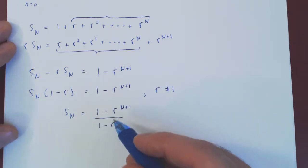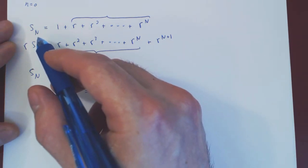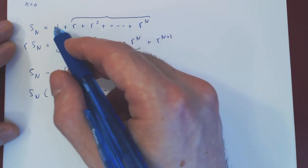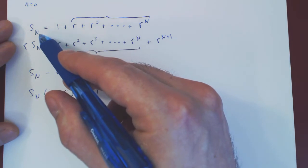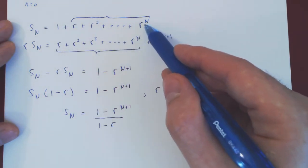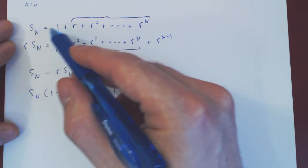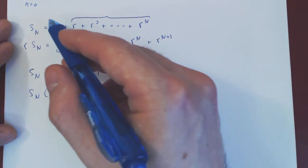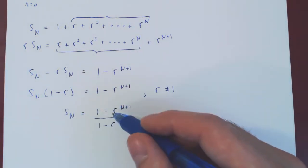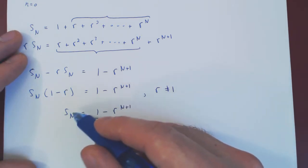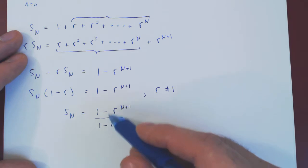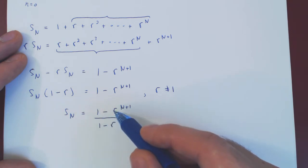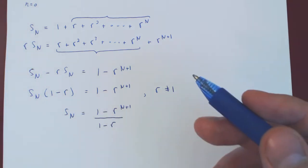Why is this fantastic? S_N was the sum of N plus 1 terms, so as N gets bigger and bigger, the expression becomes more and more complicated as we add more and more terms. But we have just proved that this complicated sum equals a simple expression. No matter how large N is, we are not adding more and more terms — the expression does not become more complicated. It will always be, for any N, (1 minus r to the N plus 1) over (1 minus r). And that's it.